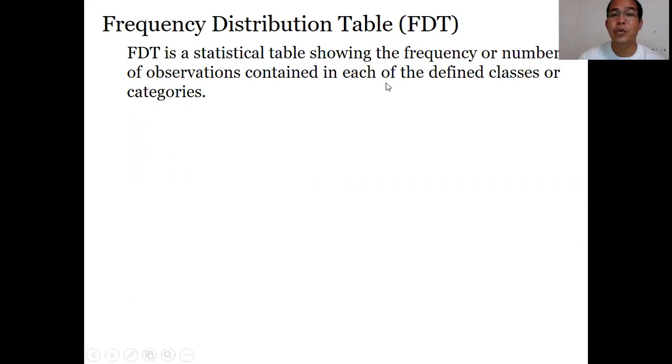Frequency Distribution Table, it is a statistical table showing the frequency or number of observations contained in each of the defined classes or categories. The observations that we are talking about here are the data or scores.